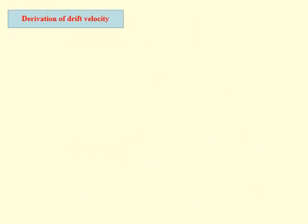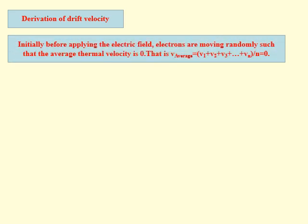Now the derivation of drift velocity — we derive the formula for drift velocity in terms of relaxation time. Relaxation time is the time taken by an electron between two successive collisions. In the absence of external electric field, electrons move randomly, so the average thermal velocity of electrons, V-average = (V1 + V2 + V3 + ... + VN) / N, is equal to zero.